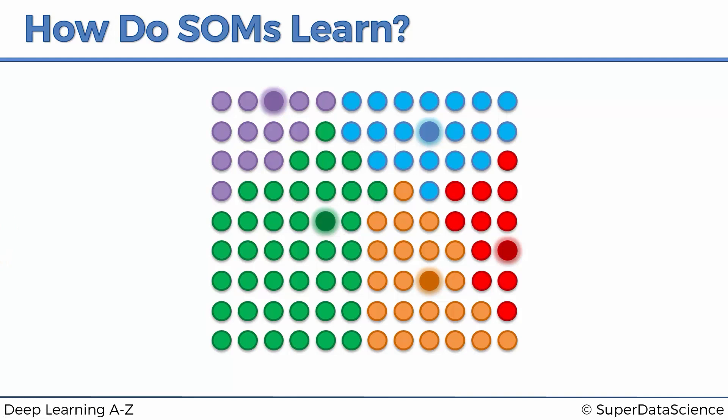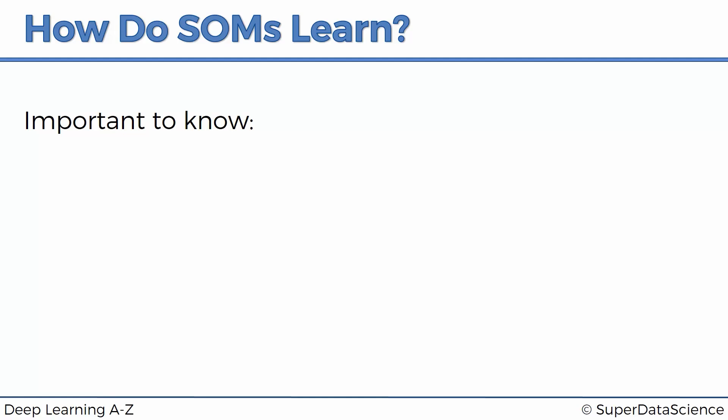Hopefully that was useful — now you have a good intuitive understanding of how self-organizing maps work and learn. Here are a couple of important takeaways. Number one: SOMs retain the topology of your input set. As we could see from the image where the map slowly becomes like a mask of your data, your data may have some topology and interrelations. The self-organizing map does everything it can to be as close to your data as possible, retaining the topology of your inputs, which is very valuable for understanding your data set better.